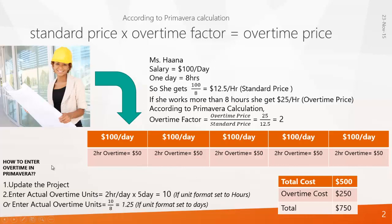So when you enter these values in Primavera, the first thing you have to do is update the project, then enter actual overtime units. Actual overtime units = two hours per day multiplied by the number of days she worked overtime — that is five days — making ten. If the unit format is set to hours, you enter ten. If the unit format is set to days, you divide ten by eight, giving 1.25 as actual overtime units.